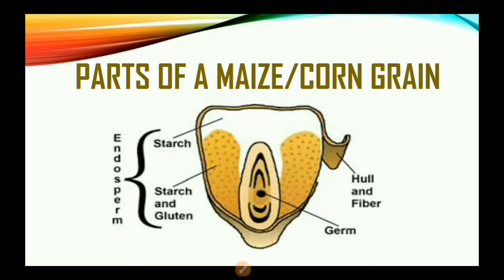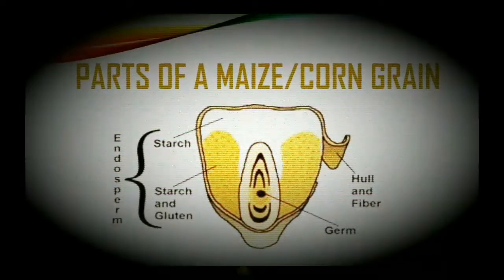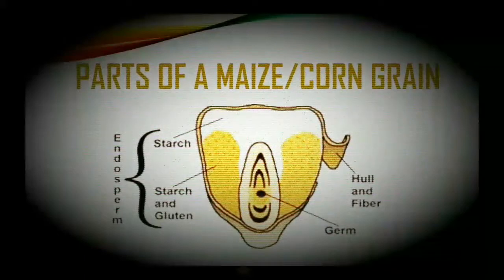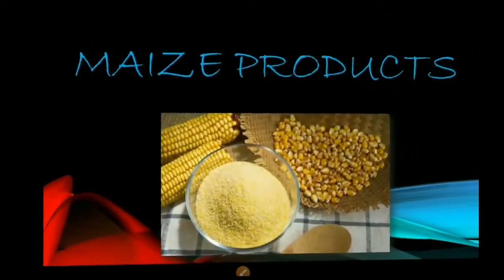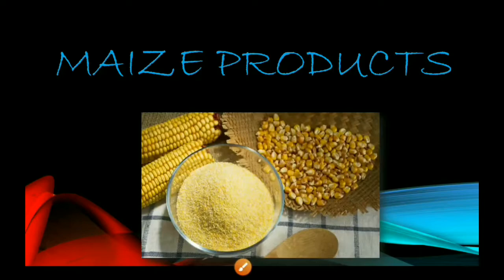Now let us explore the parts of a maize or corn grain. It is very much similar to the other cereals we have looked at, because maize is also considered a cereal. It may look a little different but has the same parts. As you can see, you can identify the germ, the hull, and the section of the endosperm.